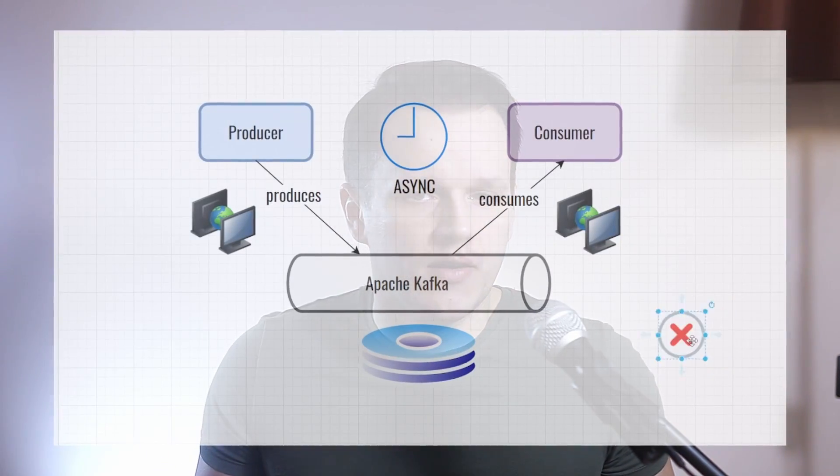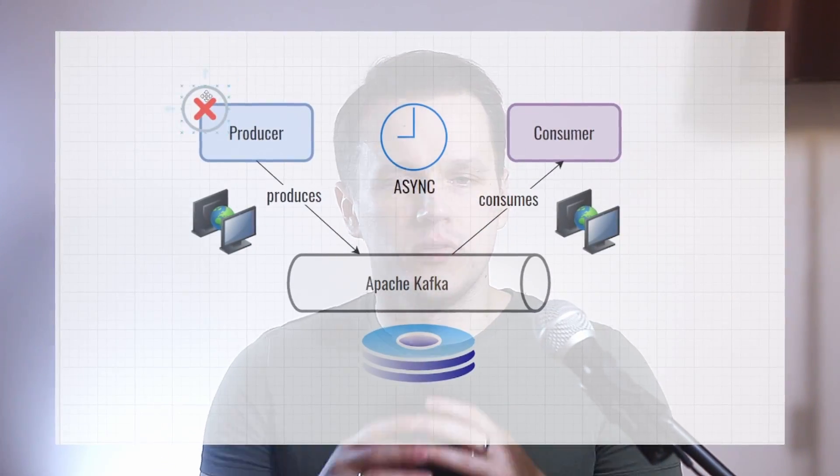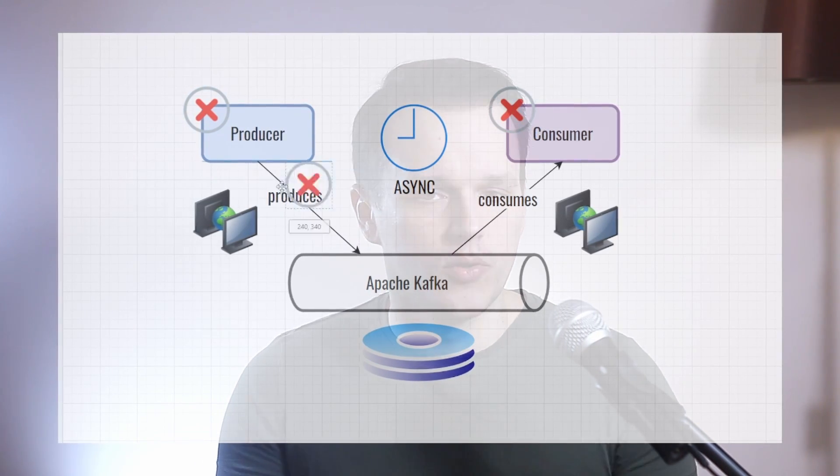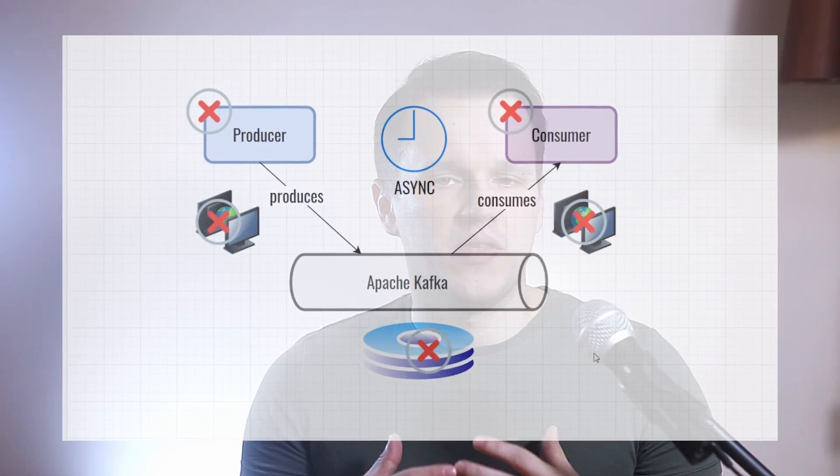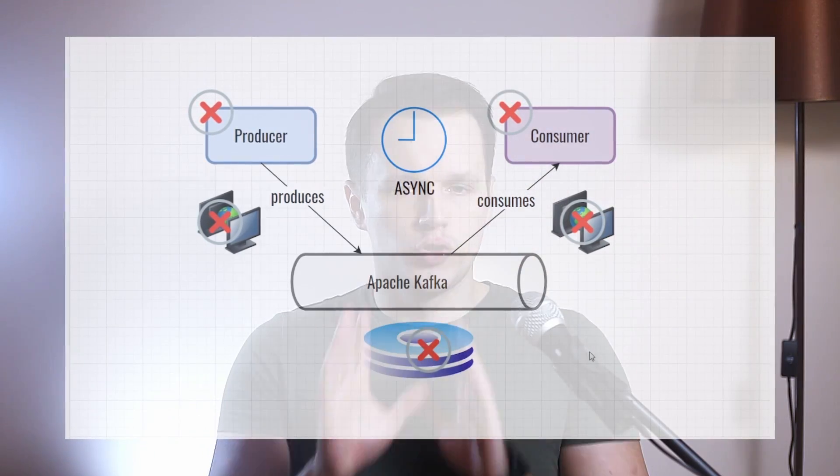Message delivery semantics defines guarantees that can be expected in worst-case scenarios. Delivery semantics rely on the behaviors of the producer, consumer and broker itself. No distributed systems are fully reliable — the complexity of factors involved in the chain is tremendous. In short, anything that can fail will fail one day.